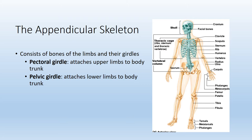In addition to the axial skeleton, the appendicular skeleton is the other major division of the skeleton. It includes all of the bones found in the upper and lower limbs as well as the girdles. We have two different girdles in the body and both are responsible for attaching the upper and lower limbs to the axial skeleton. The pectoral girdle attaches the upper limbs to the body trunk, and the pelvic girdle functions to attach the lower limbs to the axial skeleton.